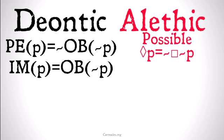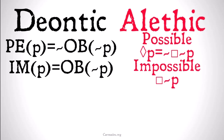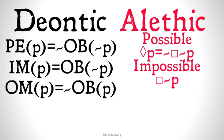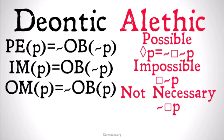'Impermissible that P' means 'it's obligatory that not P.' 'Impossible that P' means 'it's necessary that not P.' Once again, if you replace necessary with obligatory, you have the same definition.